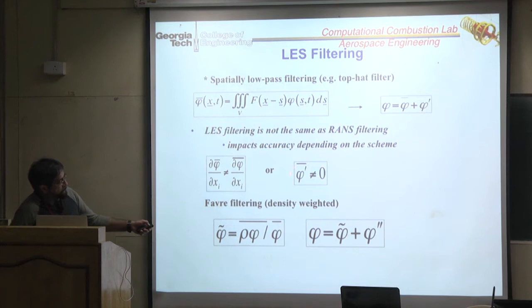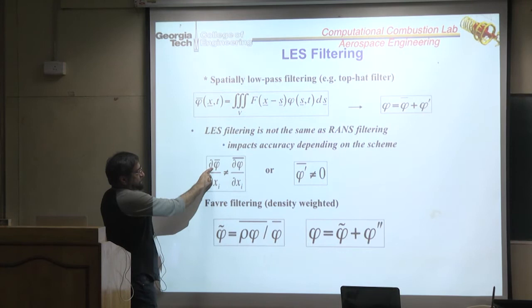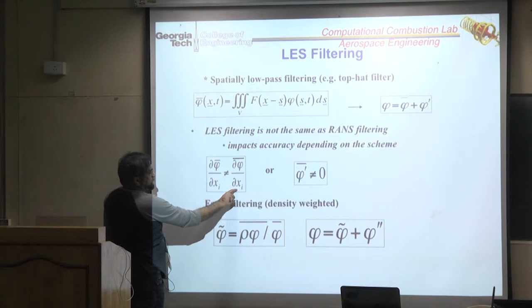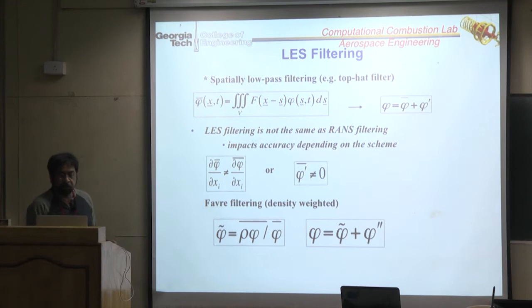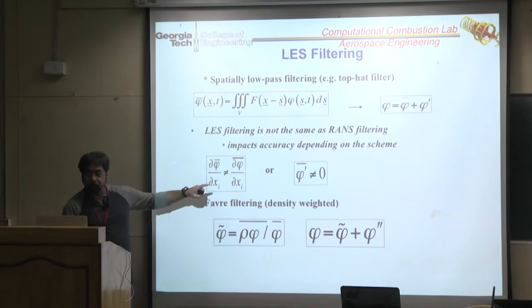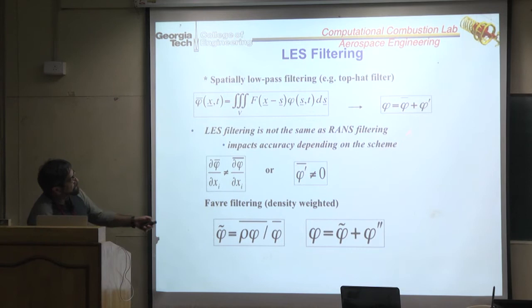For example, rho-prime bar is not zero, as you may know. Another big point—and nobody talks about it in papers—is that if you do a filtering of a spatial gradient, it is not equal to the gradient of the filtered quantity. This is only valid on a uniform grid with a top-hat filter. Anytime you have a stretched grid, a conforming grid, or any other type of filter, this is invalid. That means your LES equations are wrong to begin with. There is an inbuilt error—the question is how bad that error is.